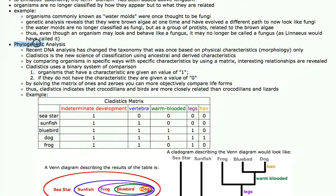Phylogenetics is all about classification of life forms, and the current way we do that is with DNA in a process known as cladistics. In cladistics, a binary system is used to compare life forms. You can use physical features, but ultimately you like to use also DNA features. As a very simple example, this is a cladistics matrix comparing a sea star, a sunfish, a bluebird, a dog, and a frog.